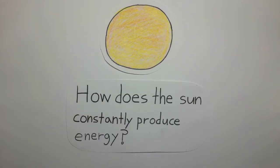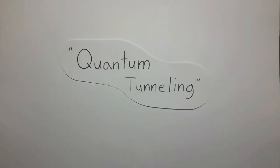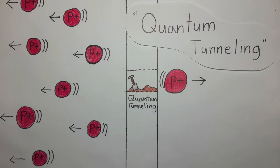The sun actually goes through a process called quantum tunneling. Quantum tunneling is where a particle tunnels through a potential barrier with small probabilities that is impossible to tunnel through in classical physics.